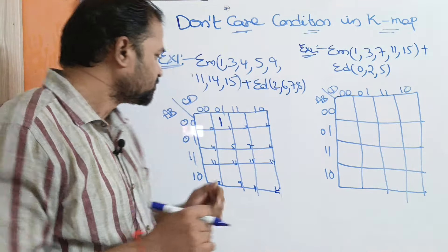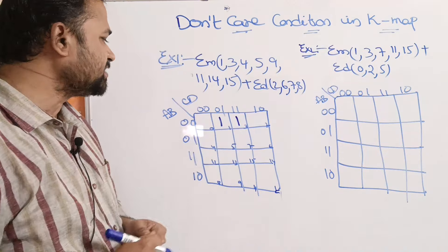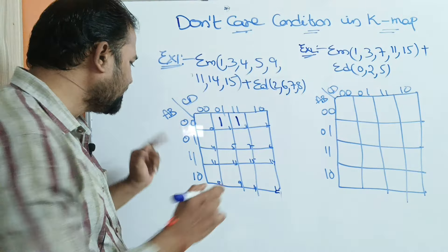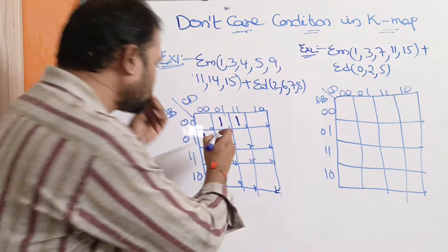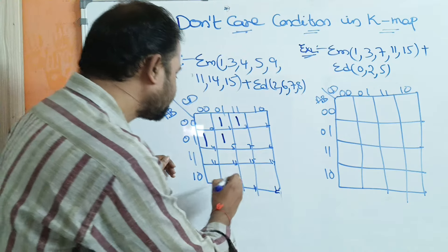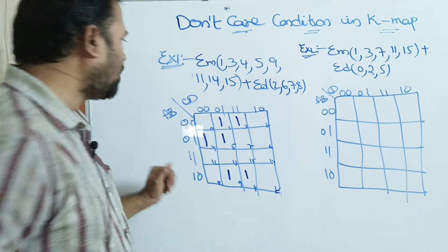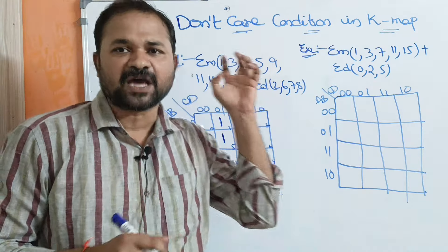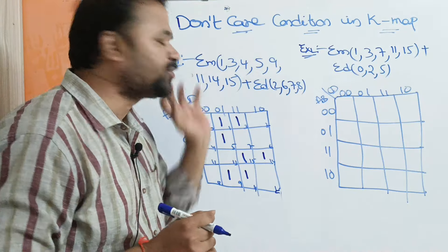Minterm 3 means 0,0,1,1 — for this input combination the output is also 1. Minterm 4 means 0,1,0,0, so this cell's output is also 1. Minterm 5: input combination 0,1,0,1, output is 1. Next, 9 means this cell, output is 1. 11, this cell, output is 1. Next, 14 and 15 — these cells output is 1. In sum of products, the output is 1 for all the specified input combinations.